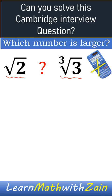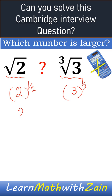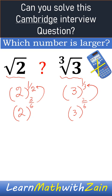Square root of 2 can be written as 2 to the power 1/2, and cube root of 3 can be written as 3 to the power 1/3. We can also write these as 2 to the power 3/6 — which is the same as 1/2 — and 3 to the power 2/6 — which is the same as 1/3.